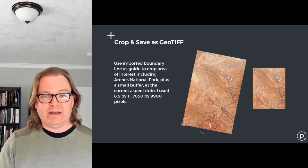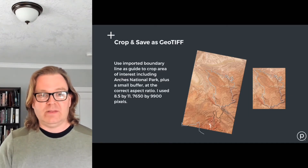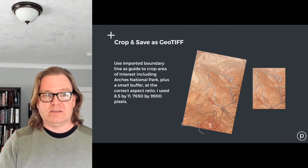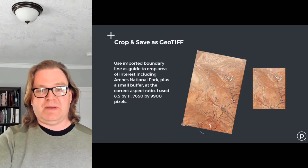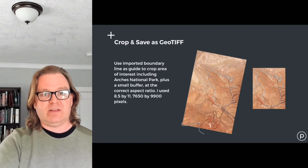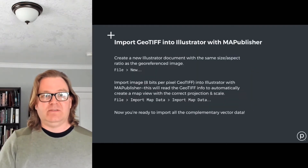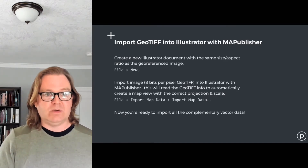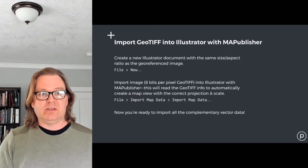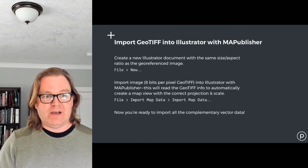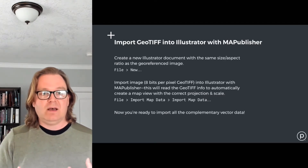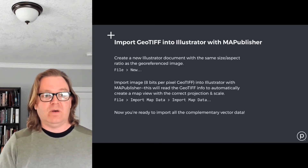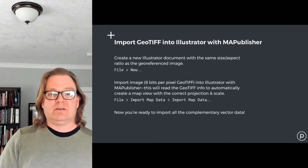The next step is to crop and then export for importing into Illustrator. I'm using an aspect ratio of 8.5 by 11, which ends up at 7,650 by 9,900 pixels. Then save that as a geotiff without the stroked boundary, because I want to do that in Illustrator, which has much more capable controls for styling vectors. To import that geotiff in Illustrator, use Map Publisher. I remember the dimensions and create a new Illustrator document at those exact dimensions or that aspect ratio — just File > New, set height and width in pixels or points. Import the 8-bit-per-pixel geotiff into Illustrator with Map Publisher, which reads the geotiff info and automatically creates a map view and artboard with the exact correct projection and scale, using File > Import Map Data.